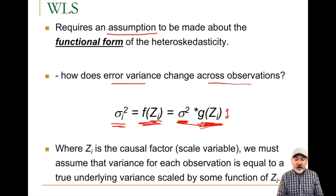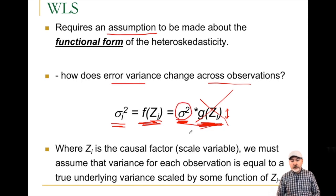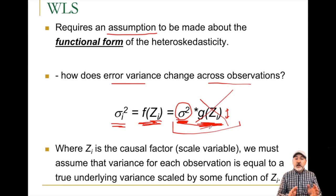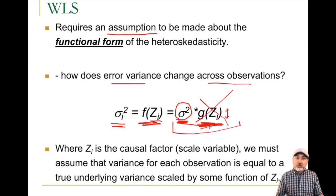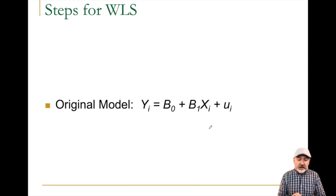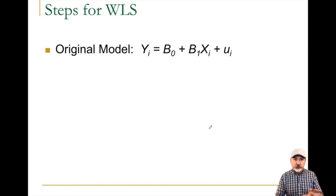This z variable is our scale variable, our causal factor. What this assumption buys us is: if only we could cancel out that g of z effect, underneath it all is this constant sigma-squared. Getting to that point is exactly what weighted least squares is designed to do. But the main point is that this is all by assumption — we don't have proof there is this common factor sigma-squared that is scaled up and down, but if it does act like this and we know what z is, we can apply it.